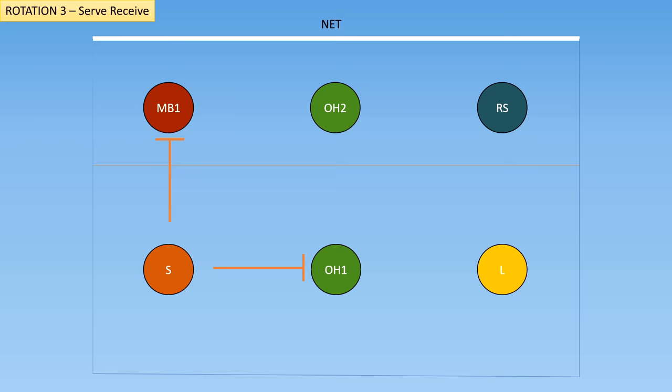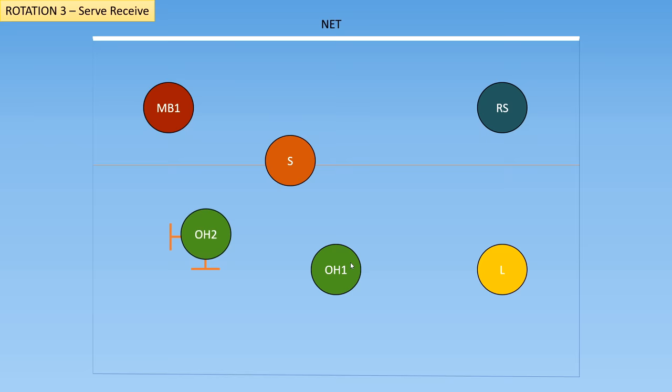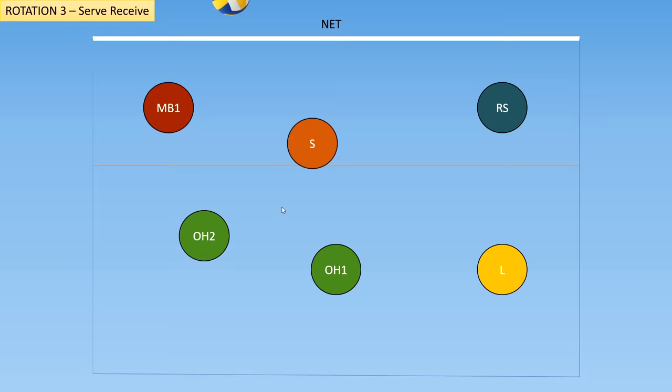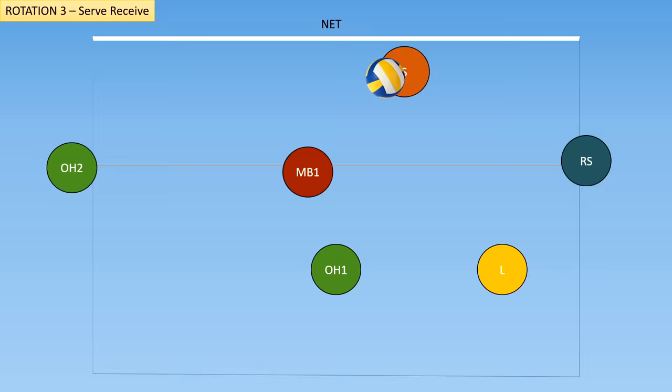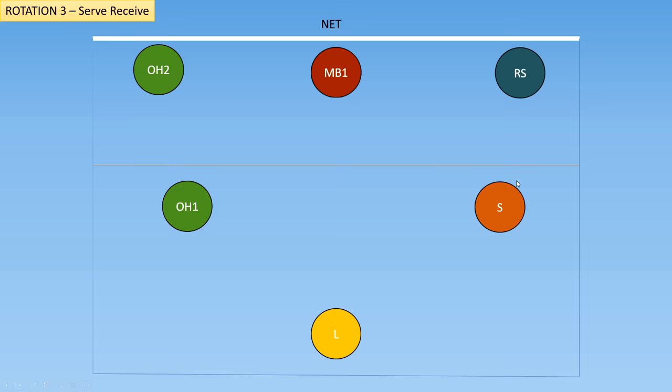Now serve-receive for rotation three. The setter is currently bounded by these two players, and what we're going to do is push the setter all the way up to the middle of the court — they're still not crossing in front of the middle blocker, and still not crossing to the right of the outside hitter. The outside hitter here cannot cross to the left of the middle or behind the outside hitter, so they're going to come all the way here and act as one of the passers. The ball comes over the net, the setter gets ready to set, all players get ready to hit, and the ball goes to the middle blocker. As soon as the ball crosses the net, we get into base positions: outside hitter to the back left, libero in the middle, setter on the back right.